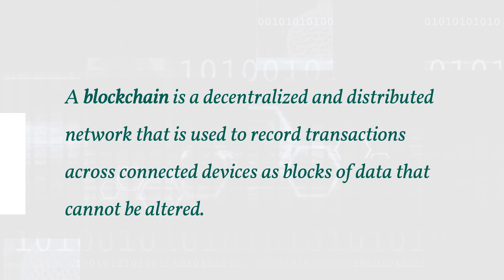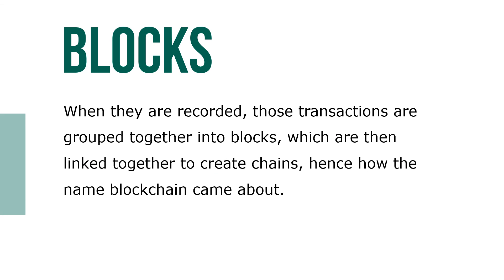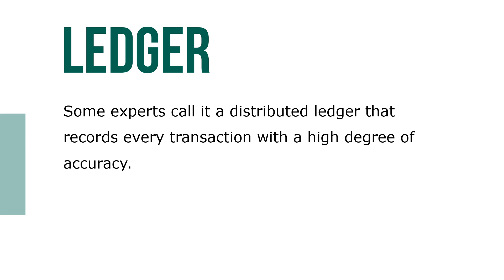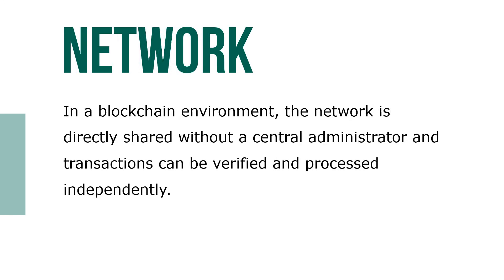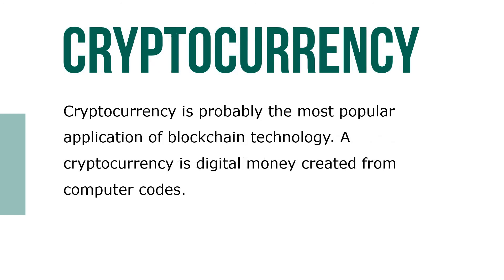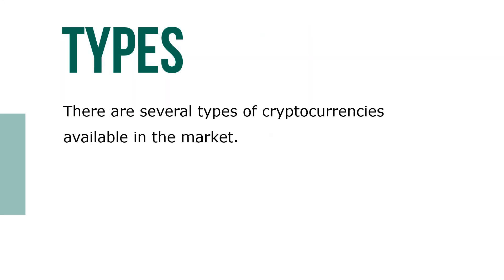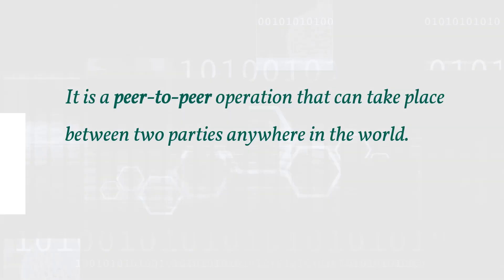Blockchain is a decentralized and distributed network used to record transactions across connected devices as blocks of data that cannot be altered. When recorded, those transactions are grouped together in blocks which are then linked together to create chains – hence the name blockchain. Some experts call it a distributed ledger that records every transaction with a high degree of accuracy. In a blockchain environment, the network is directly shared without a central administrator and transactions can be verified and processed independently. Cryptocurrency is probably the most popular application of blockchain technology. A cryptocurrency is digital money created from computer codes, and it's a peer-to-peer operation that can take place between two parties anywhere, anytime in the world.